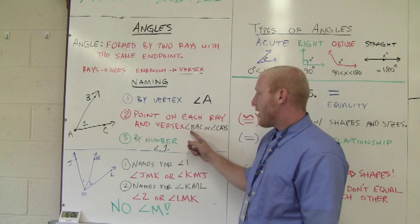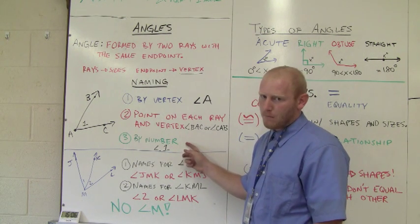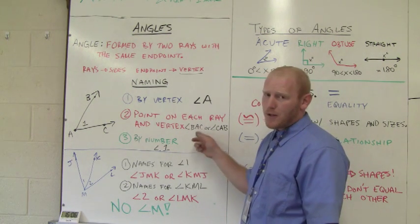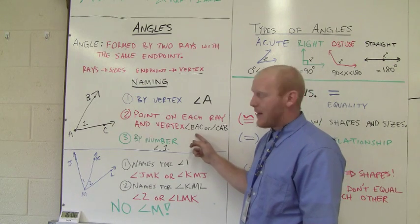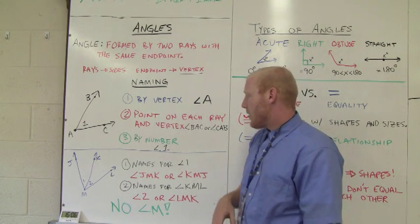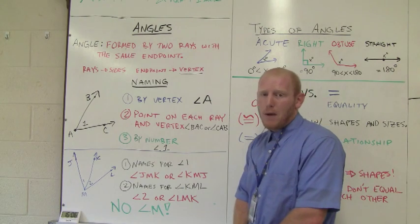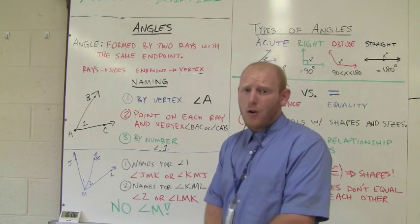By vertex, point on each ray and vertex, and by number. Definitely know number 2 because you'll see situations where we have to name it that way. So here you have an example down below. On your paper, I suggest you stop the video and try on your own.